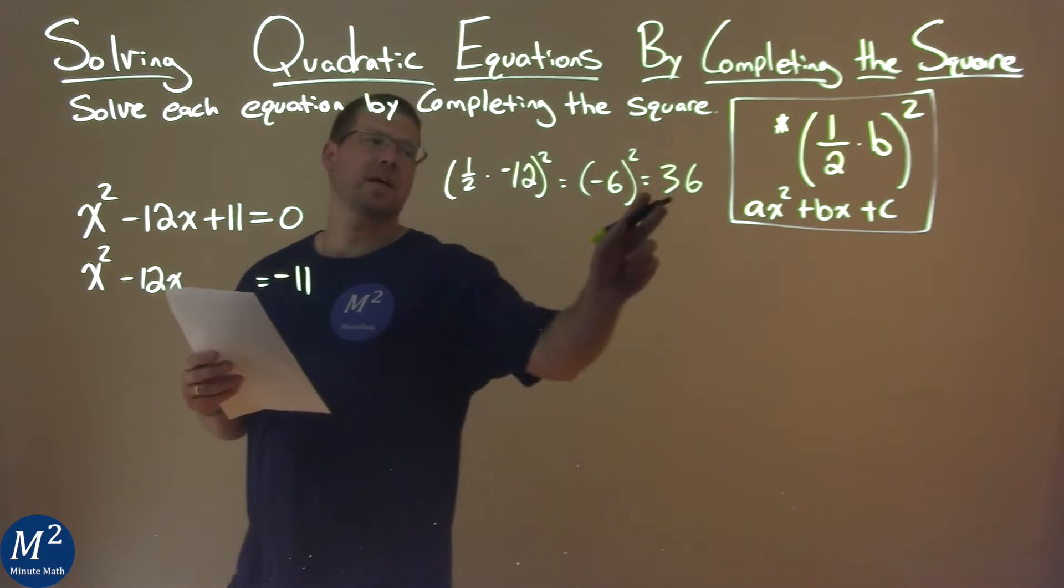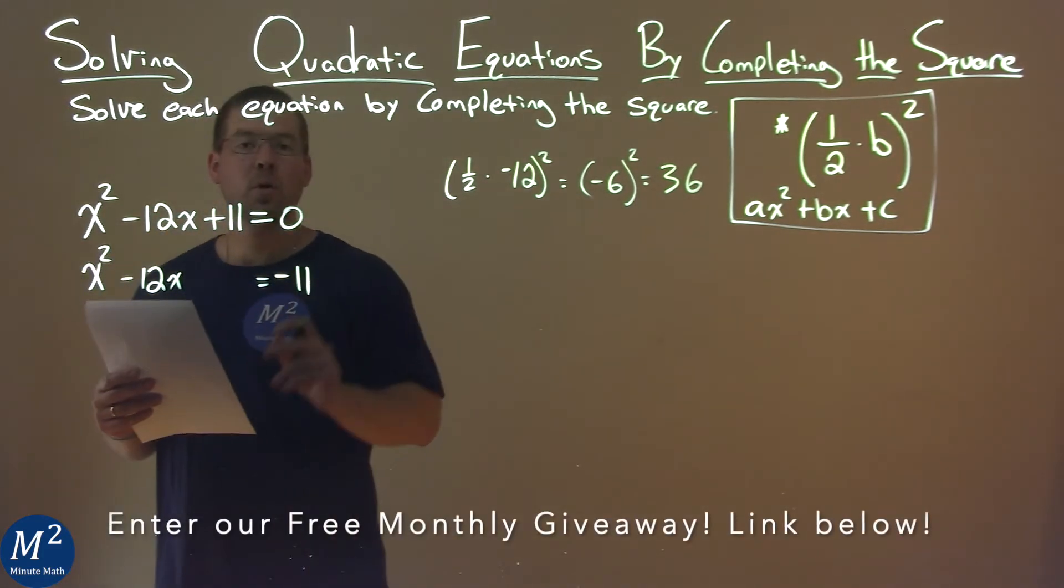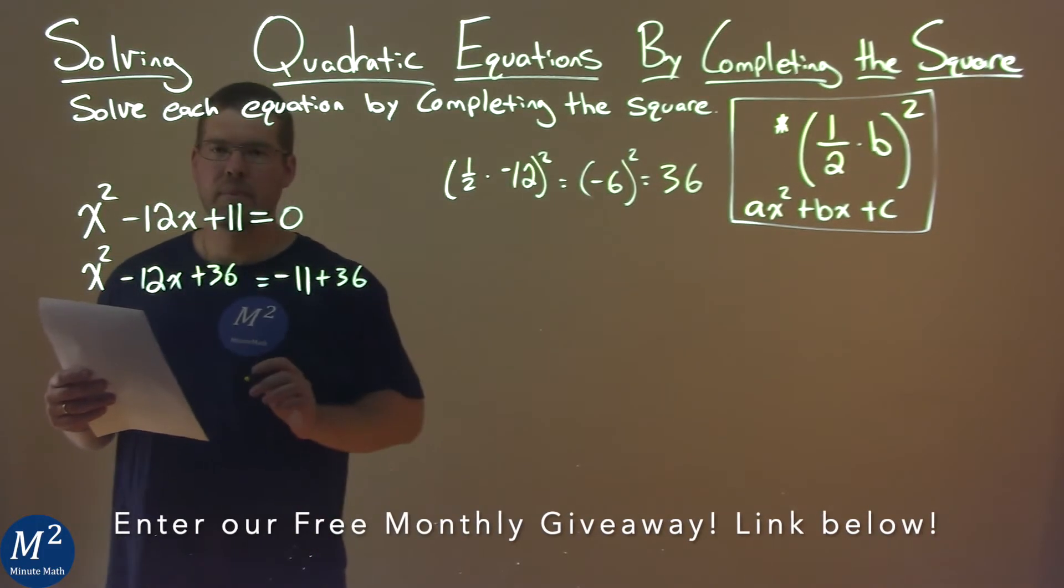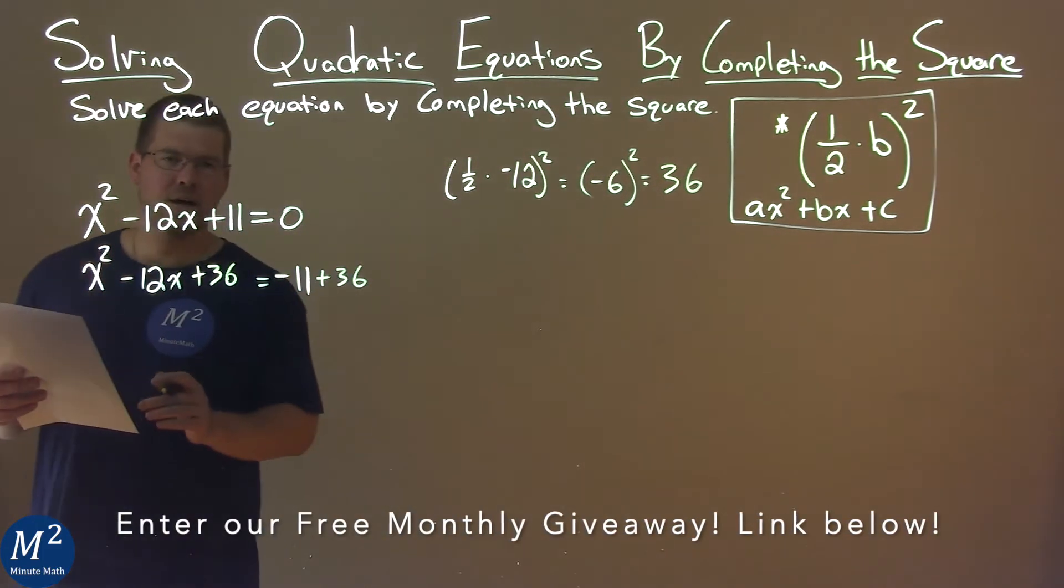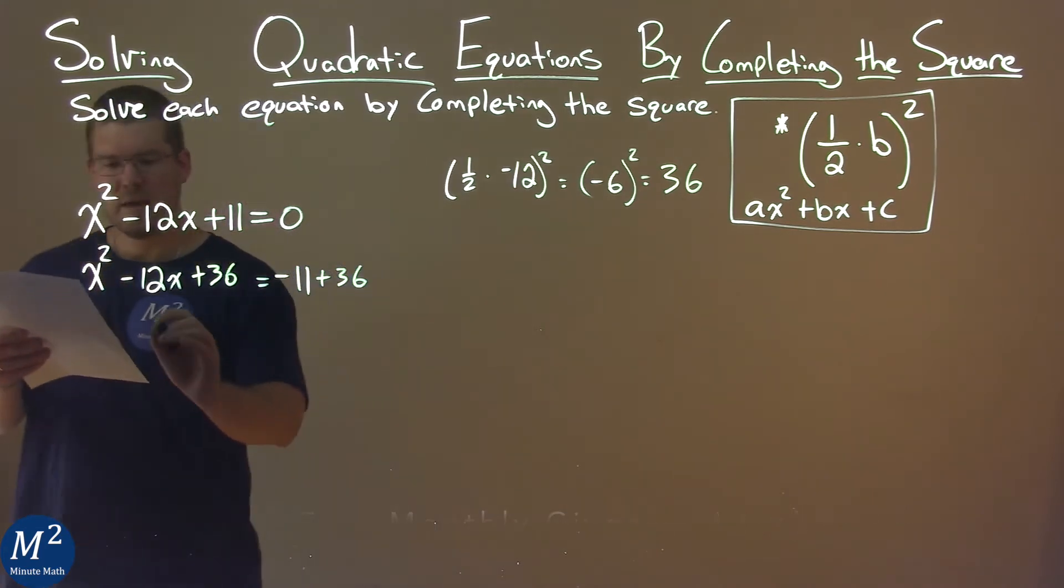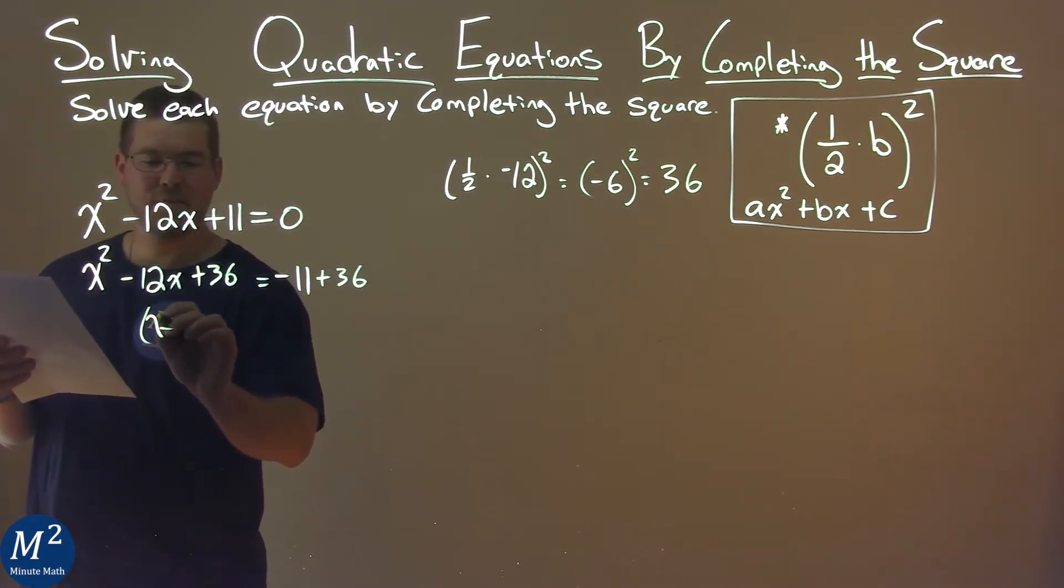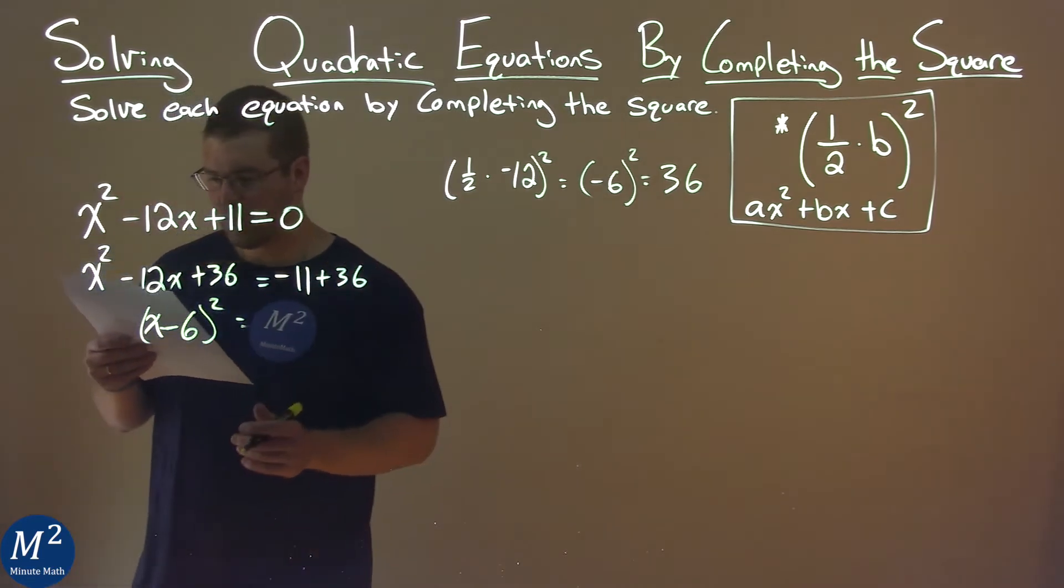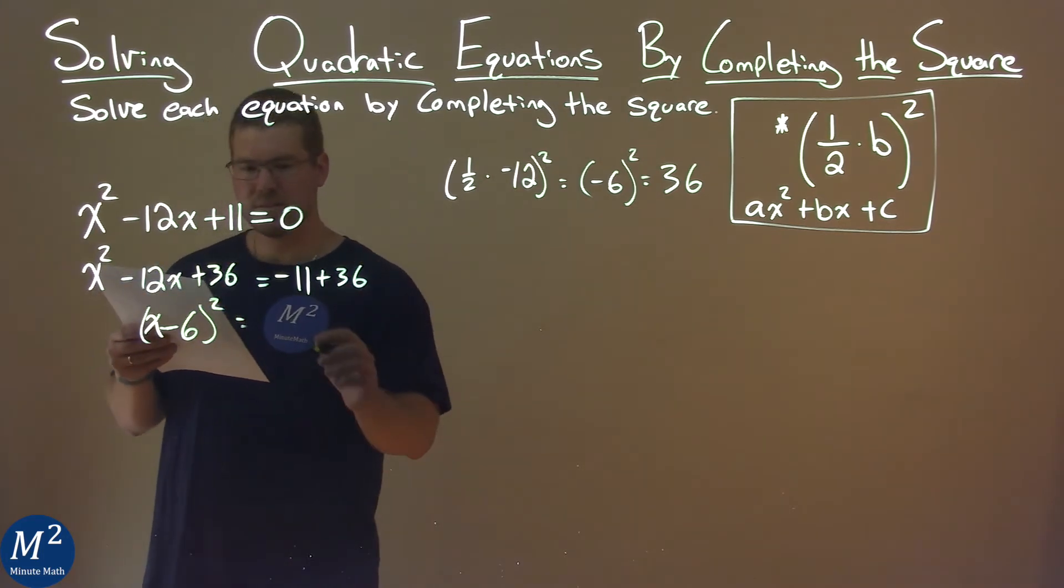So now I'm going to take that 36, and I'm going to add it to both sides of the equation. Now the left-hand side is a perfect square. It's x, that's a minus sign, x minus 6, all squared, equals, well, negative 11 plus 36 is 25.